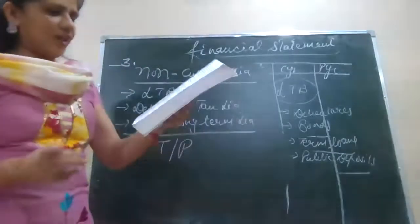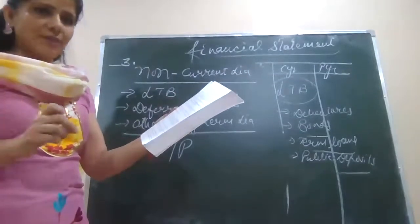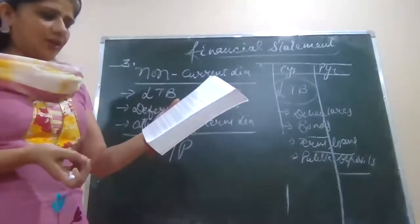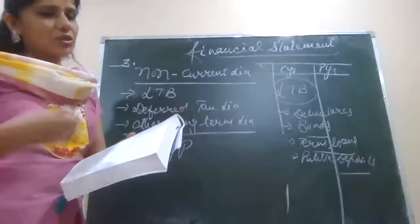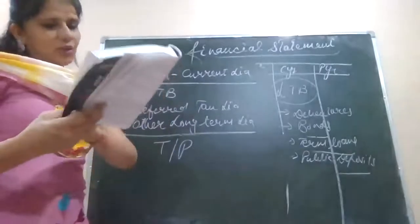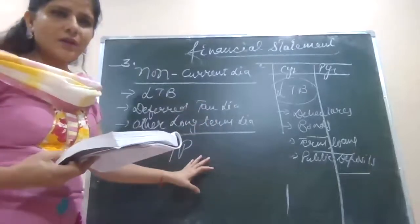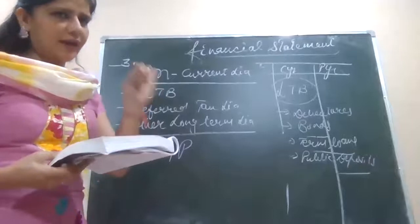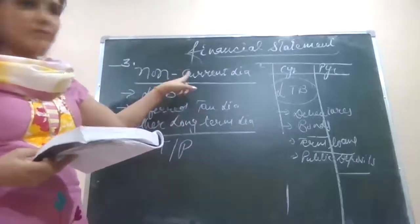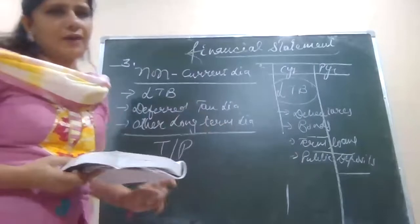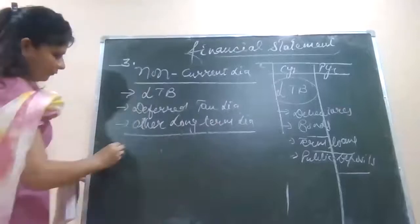Premium on redemption of debentures — if debentures are shown under long-term liabilities, the premium is also an other long-term liability. Similarly, when you redeem your preference shares at a premium, that extra amount over face value is also your other long-term liability. Put a tick or star over these two items. Your answer should be: main head is non-current liability and the subhead is other long-term liability.